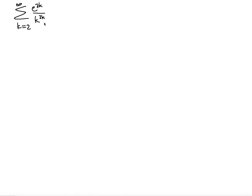You want to see if the given series is conditionally convergent, absolutely convergent, or divergent. So notice that the given series can be written as... So both E and K are raised to the same power. So you can say that E over K is raised to the power of 3K.